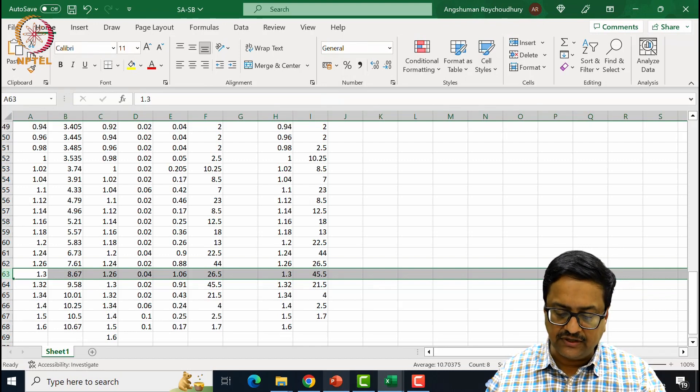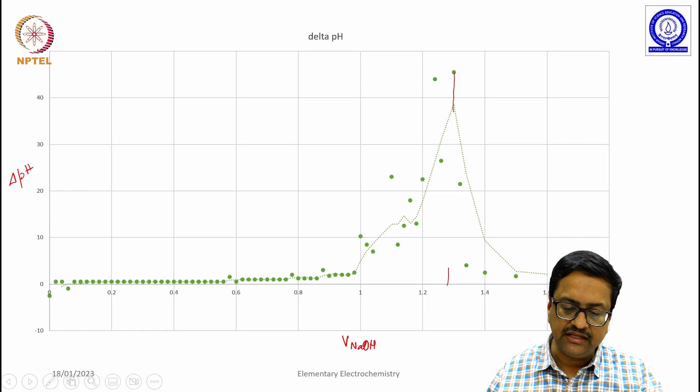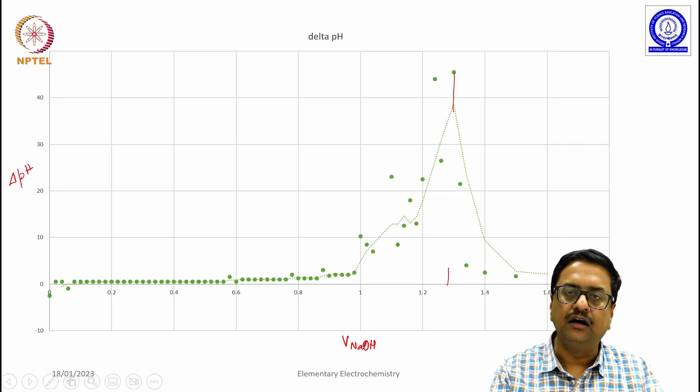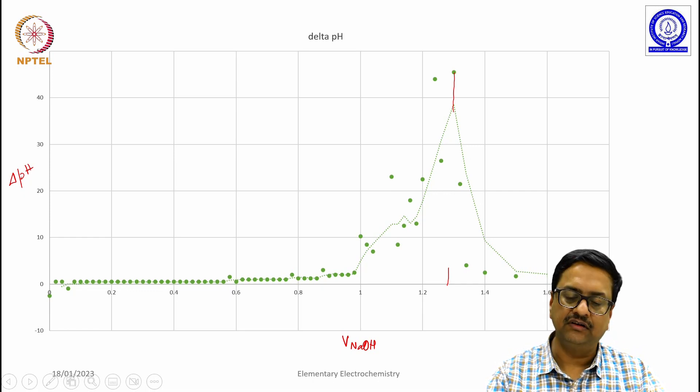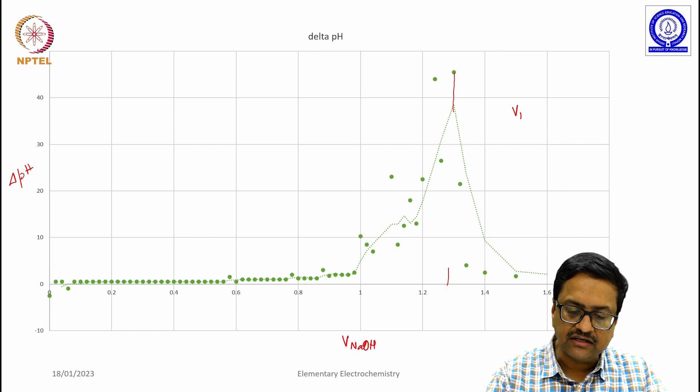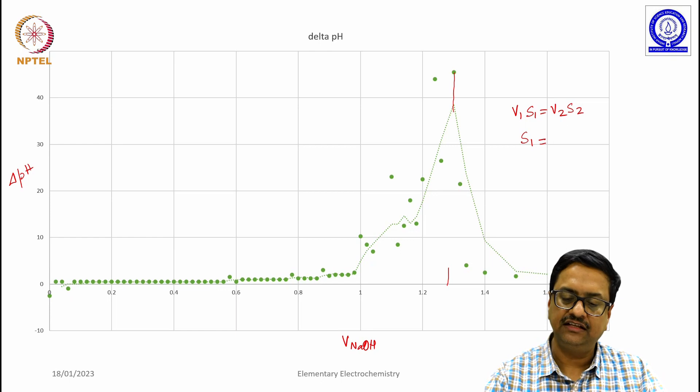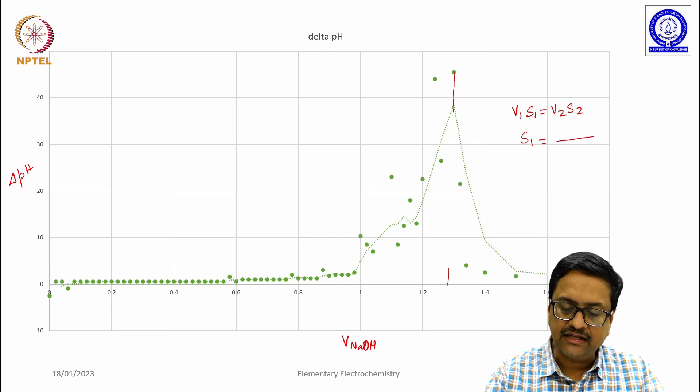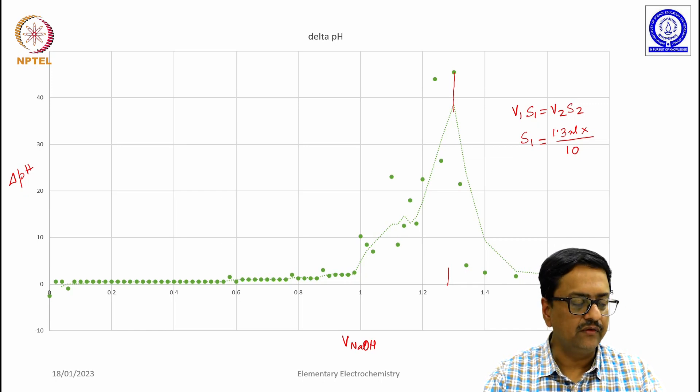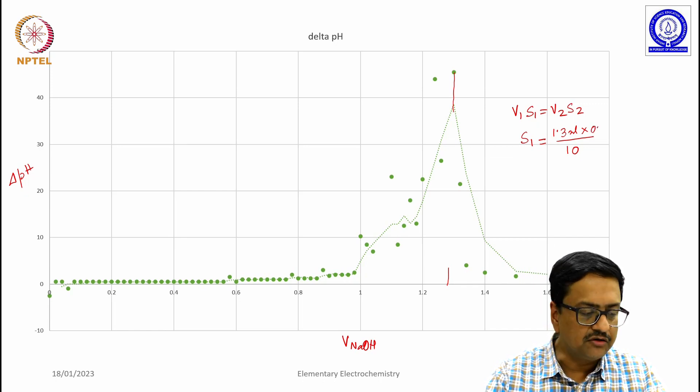So using this value as end point, one can do the calculation of the strength of HCl in this particular experiment using the same V1 S1 equal to V2 S2 formula. And here S1 is the strength of HCl that is not known. We have taken 10 ml of HCl at the beginning to start with. Volume of NaOH that was used is 1.3 ml into the concentration of NaOH that was observed is 0.0919 normality.